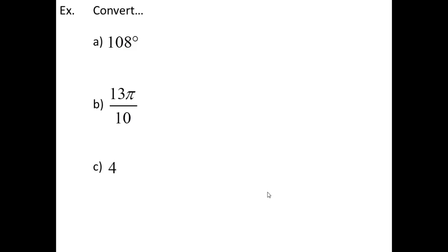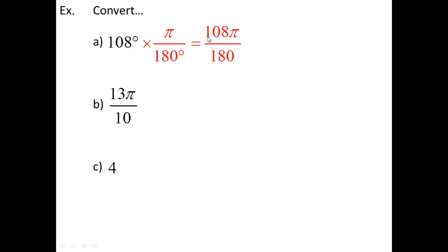Here are three more to try on your own. First: 108 degrees to radians. Multiply by π/180 to get 108π/180. Both are even, cut in half: 54/90. Cut in half again: 27/45. Both divisible by 9: 3/5. So the answer is 3π/5.